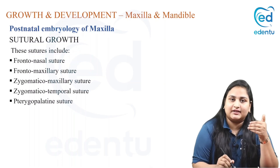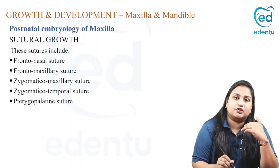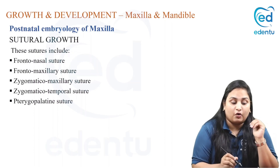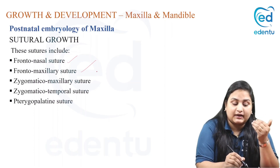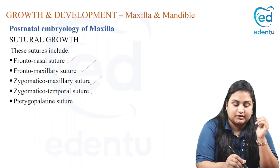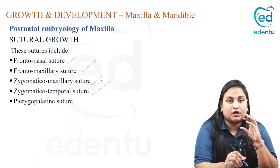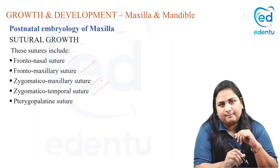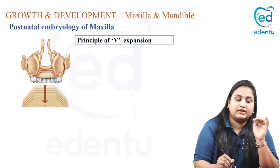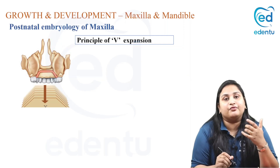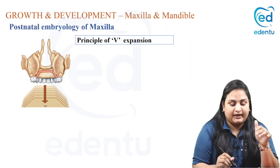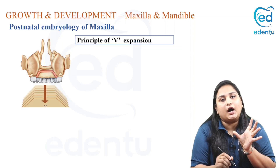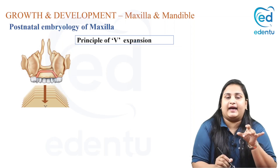Sutural growth centers also contribute to the overall development of maxilla. The common sutures involved are the frontonasal suture, frontomaxillary suture, zygomatic maxillary suture, zygomaticotemporal suture, and the pterygopalatine sutures. Closure of these sutures brings about significant morphological change in maxilla. Regarding postnatal development, the V theory (Enlow's theory) explains growth in an inverted-V shape, where posterior growth shows more deposition between the two arms of the V than in its anterior aspect.